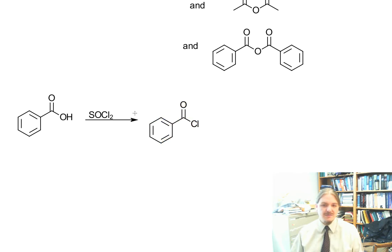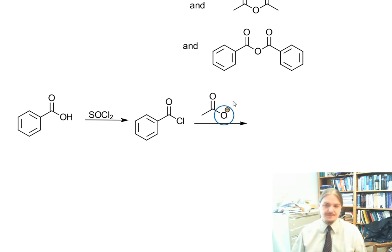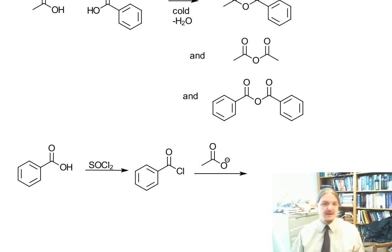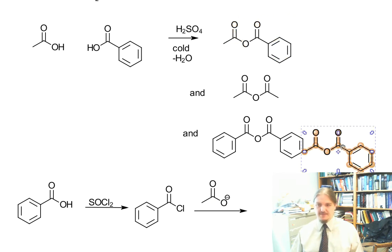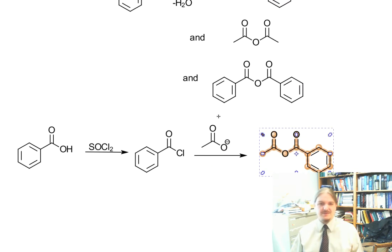And now you have something that's a much better electrophile, and you can react it with other nucleophiles. For example, the conjugate base of the other carboxylic acid. And you can get the mixed anhydride that you want following the basic mechanism.